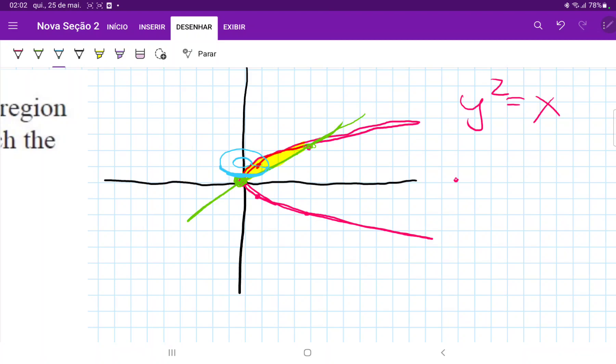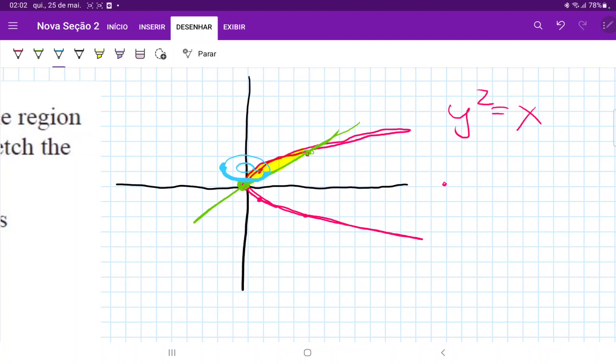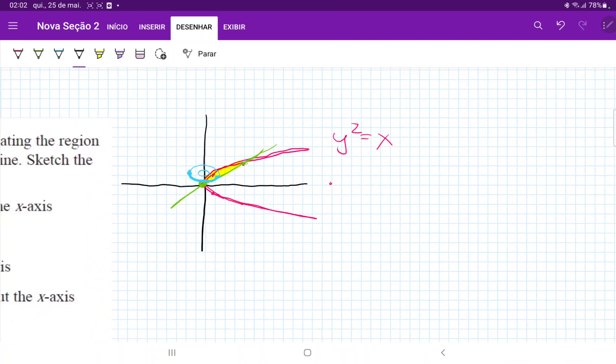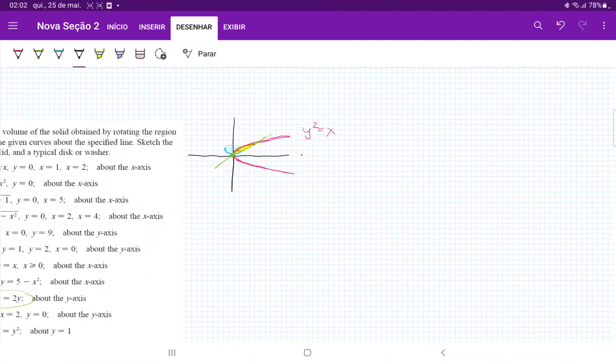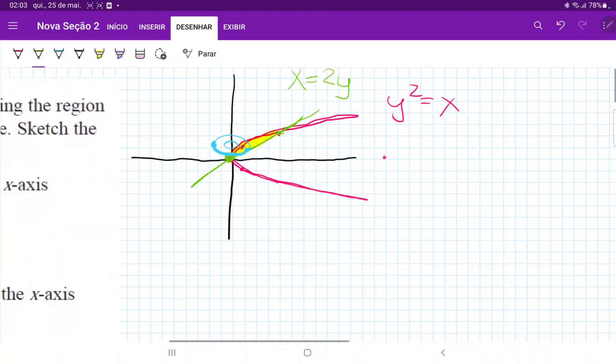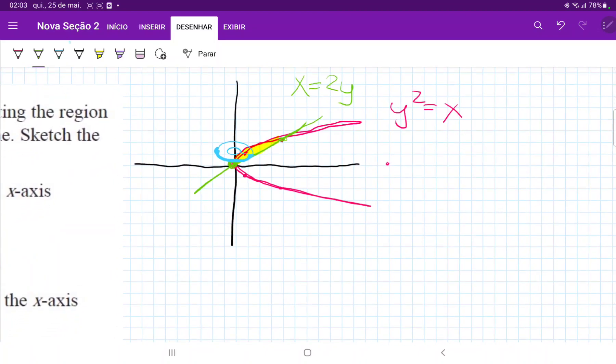So we're summing up these donut-shaped things from the two points where they intersect. Now they intersect, and let's just check this. So we'll set these curves equal to each other just to see where they intersect. So we have that, and I didn't write this, let's see, 2y. I should have written that x is equal to 2y here.